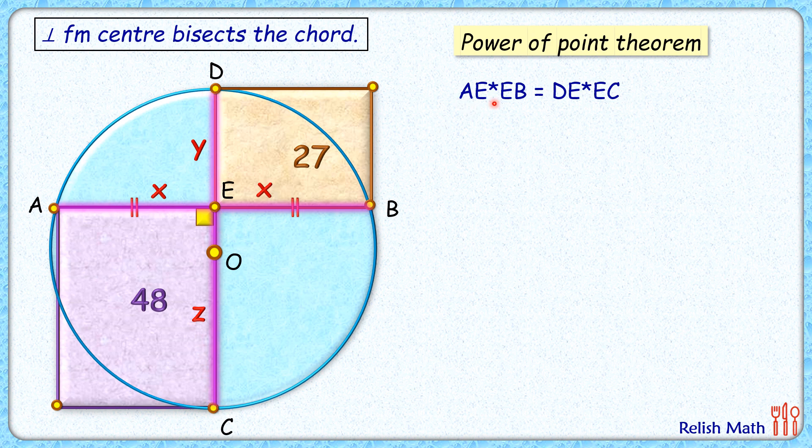Putting AE and EB as x, and DE and EC as y and z, we get x² = yz. Let's call this equation number one. Now this brown rectangle has area 27, and area of a rectangle is length times breadth. So from here we get xy = 27. Let's call it equation number two. Same way, the purple rectangle has length x and breadth z, so xz = 48. This is equation number three.